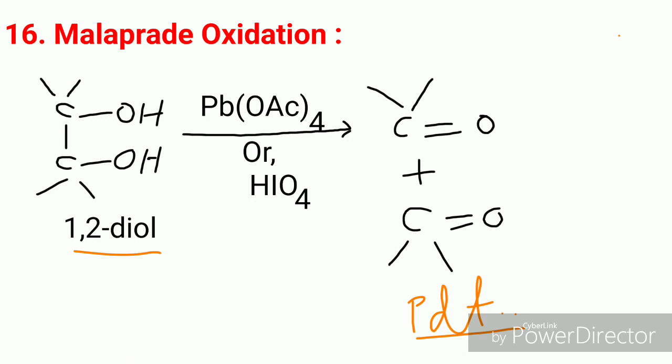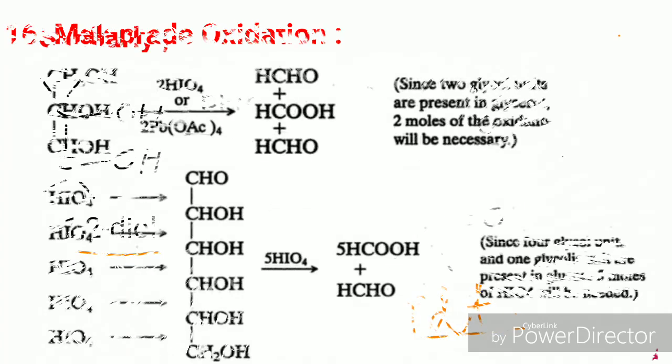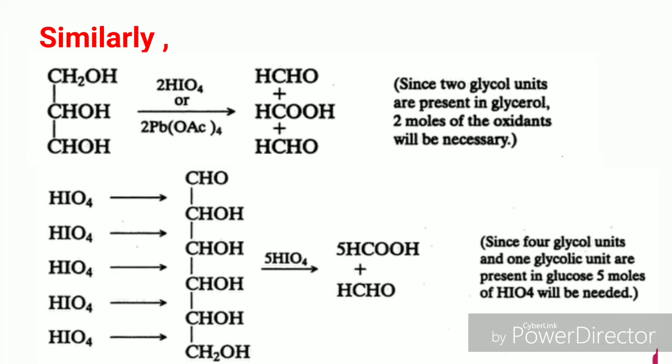Now an important oxidation called Malaprade oxidation. Here a 1,2-diol is converted to two corresponding ketones by lead tetraacetate or periodic acid (HIO₄). Similarly, CH₂OH is converted to formaldehyde, CHO is converted to formic acid, and CHOH is converted to formaldehyde. You should remember that the number of bonds between carbon atoms equals the number of moles of HIO₄ or lead tetraacetate required. Thus in the second example, five molecules of periodic acid or lead tetraacetate are required.